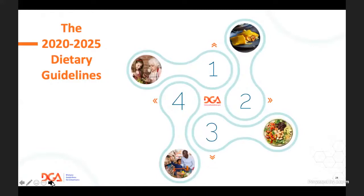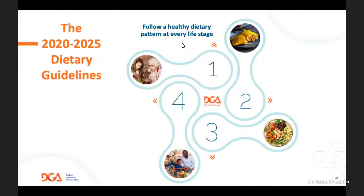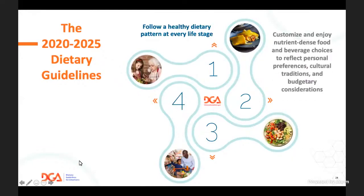The first guideline takes the life-stage approach: follow a healthy dietary pattern at every life stage. We have different patterns in infancy, but one consistent finding is that even after the first year of life—the 12 to 24 month period—what constituted a healthy dietary pattern was fairly consistent throughout the life stages. This suggests we can begin children after that first year on healthy patterns and start to set the stage for intake that will follow them throughout their lives.